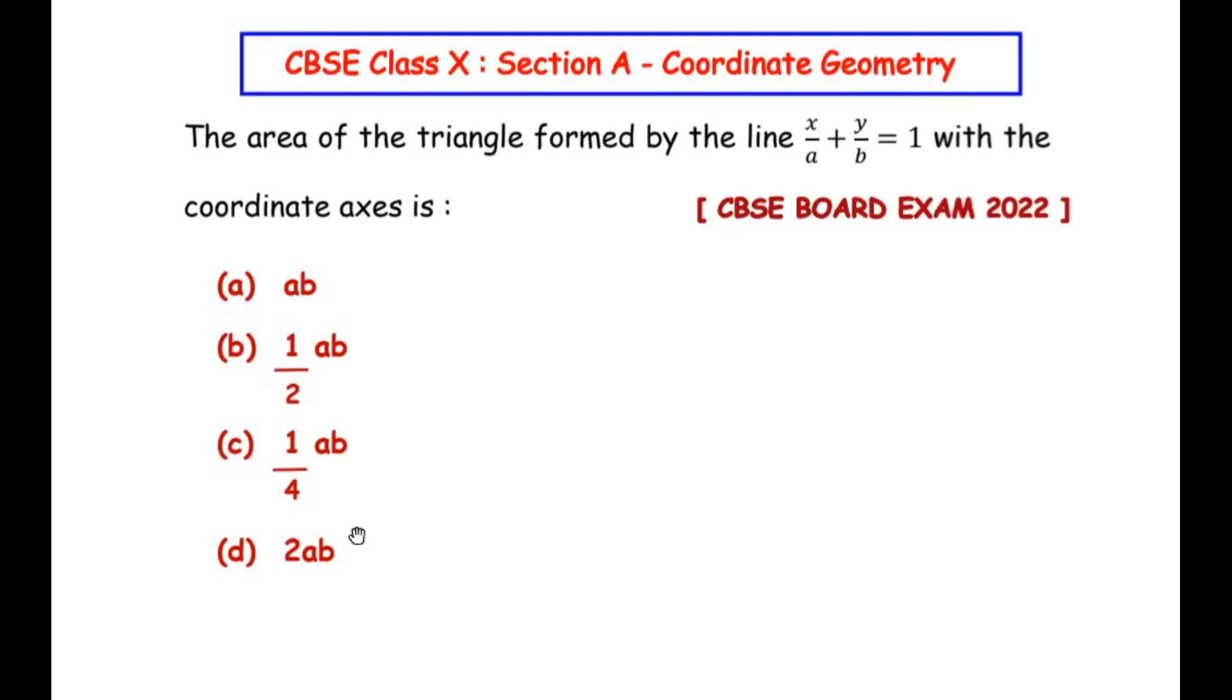And we can see that there are four options given. To understand this question, let us make use of a rough figure first. Here, two coordinate axes are shown: one is the x-axis and one is the y-axis, and they both meet at the origin, which is shown as O. Now here we have shown a line representing the given equation x over a plus y over b equals 1.